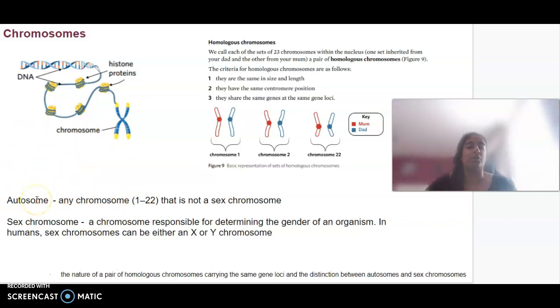Autosomes are any chromosomes number 1 to 22 that are not your sex chromosome. Your sex chromosomes identify whether you are genetically male or female. If you have two X chromosomes, you are female. If you have X and Y chromosomes, you are genetically male.